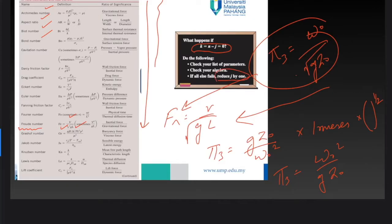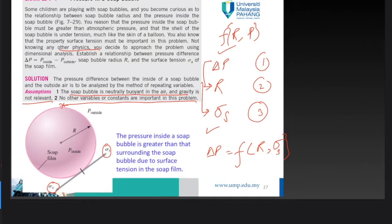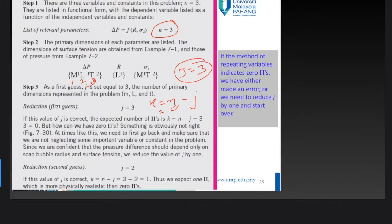When k = n − j = 0, we reduce j by 1. So we take j = 2, giving k = n − j = 3 − 2 = 1. The number of non-dimensional pi parameters is 1.